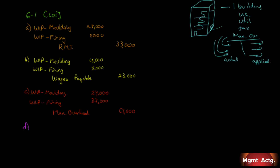Transaction D: Unfired, molded bricks were transferred from the molding department to the firing department. Work in process firing must increase, and work in process molding decreases. According to the company's process costing system, the cost of the unfired molded bricks was $67,000. So $67,000 enters the firing department and $67,000 leaves the molding department.